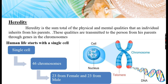Human life starts with a single cell produced by the union of two germ cells — one from the father and the other from the mother. Two germ cells form one single cell. That is why there are 46 chromosomes in a single cell: 23 from the father and 23 from the mother.